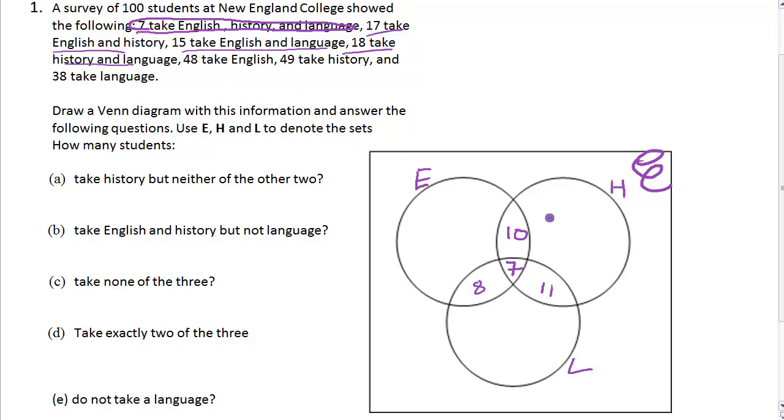48 take English, so there's 48 in this circle. Take off the 8 gives us 40, take off 10 gives us 30, take off 7 leaves us 23.